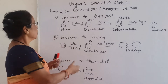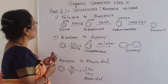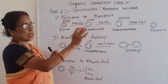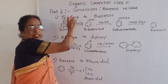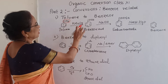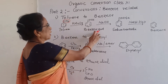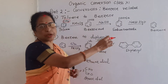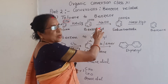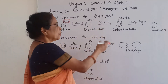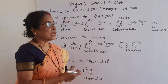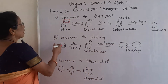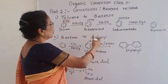First: toluene to benzene. Toluene means benzene with a CH3 group. That CH3 group changes to COOH — meaning any alkyl group present in the benzene ring changes to an acid. It becomes benzoic acid. Benzoic acid on treatment with NaOH gives sodium benzoate, where H is replaced by Na. Then with NaOH and CaO (calcium oxide) under fusion conditions, the product is benzene. So toluene treated with KMnO4 gives benzoic acid, which gives benzene via sodium benzoate.